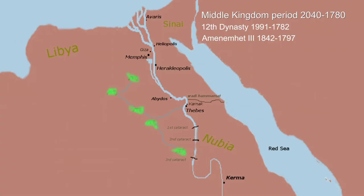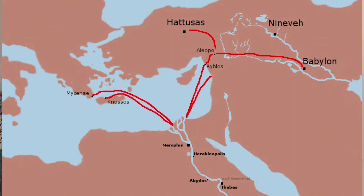Amenemhat III also made his son Amenemhat IV co-regent with him before he died. Amenemhat IV strengthened trade along the Mediterranean Sea with the Mycenaeans, the Minoans, Lebanon, and Byblos. He did expeditions into the Sinai and into Punt, which is another name for Libya. The reign of Amenemhat IV coincides with the beginning of the reign of Hammurabi in Old Babylon.